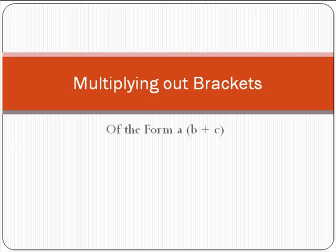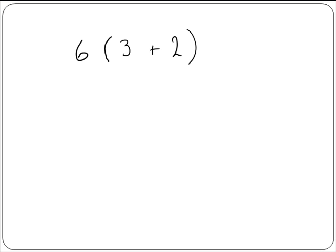Multiplying out brackets of the form a by b plus c. When a number is written outside a set of brackets, such as 6 in this example, it means that this number is to be multiplied by everything inside the brackets.